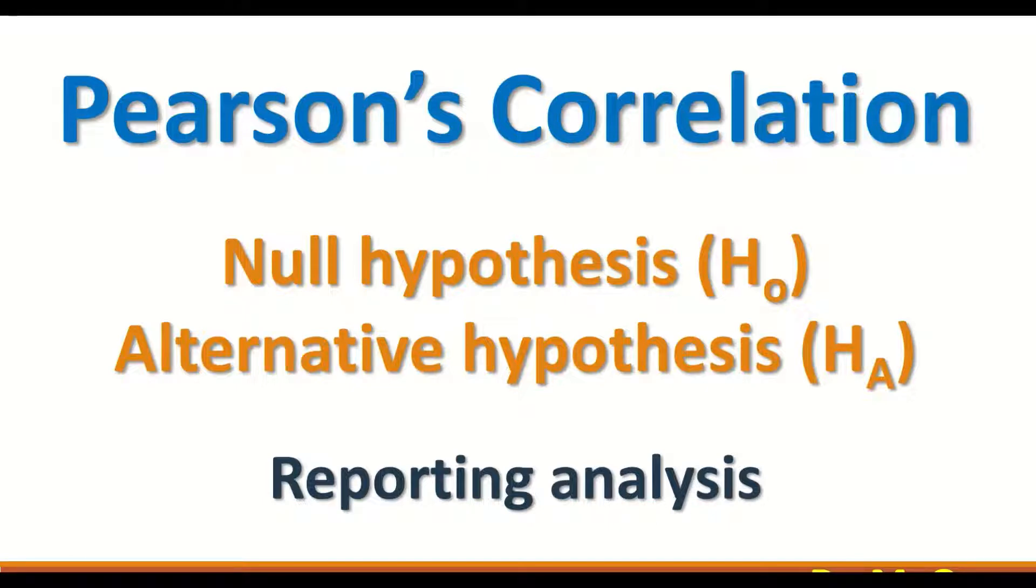Those two variables are parametric. The test determines whether the variables have a strong relationship, the direction of this relationship, the value of this relationship, and the statistical significance.